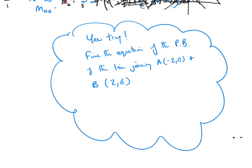Now you try: find the equation of the perpendicular bisector of the line joining A(-2, 0) and B(2, 6). Remember, the first move is to sketch something out.